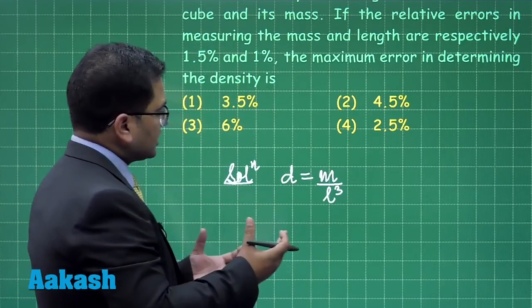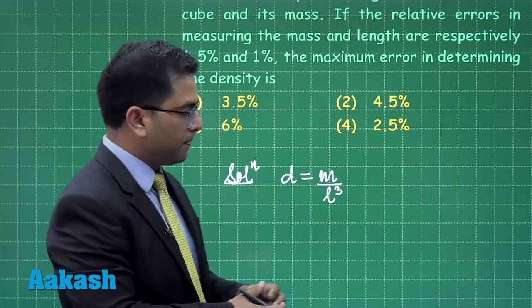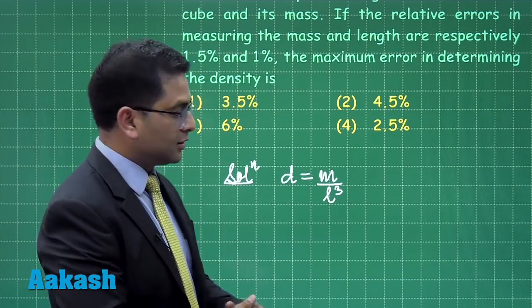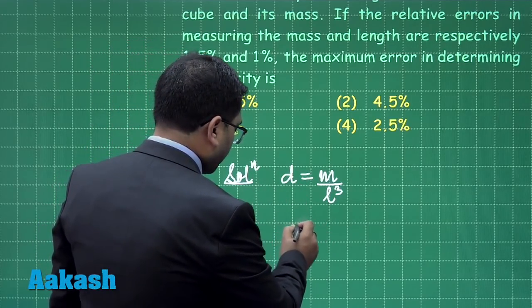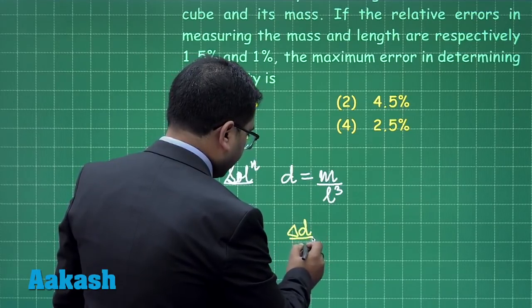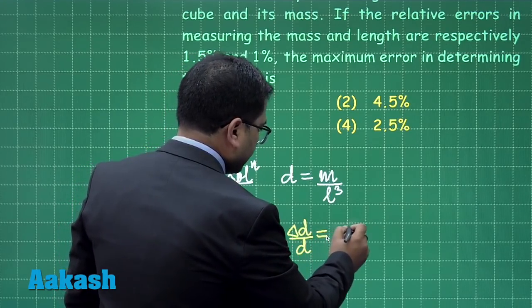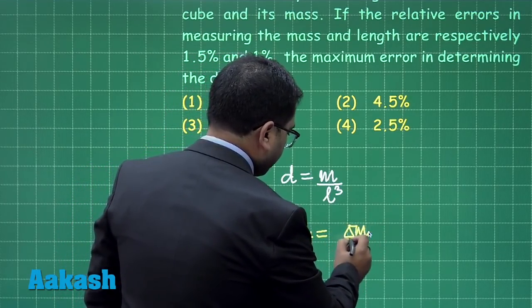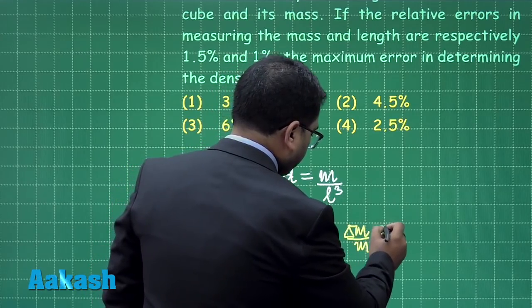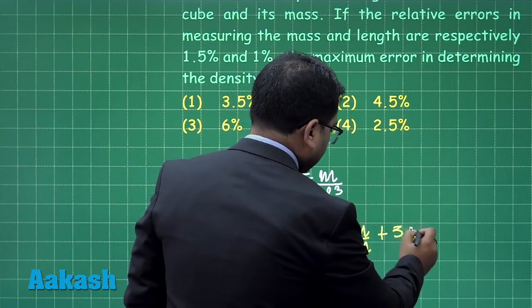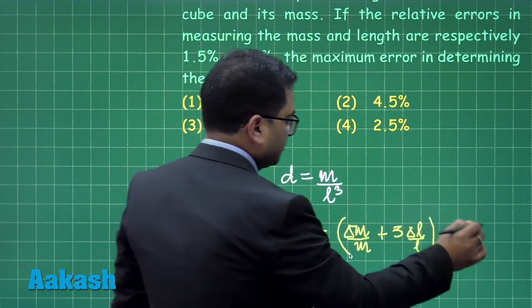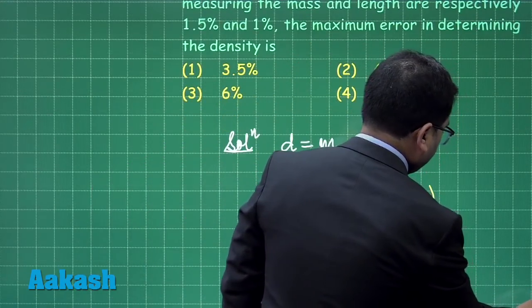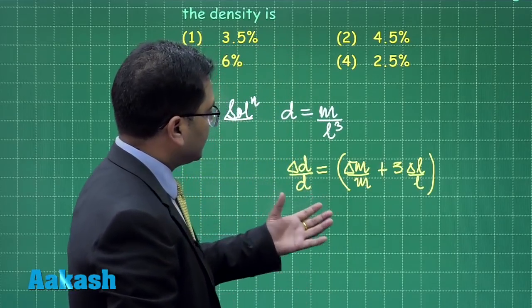Now using the definition of error propagation in division with power, that's not a big deal. Straightaway, ΔD/D = (ΔM/M + 3ΔL/L) × 100%. That is already understood; we are going to deal with the percentage error.